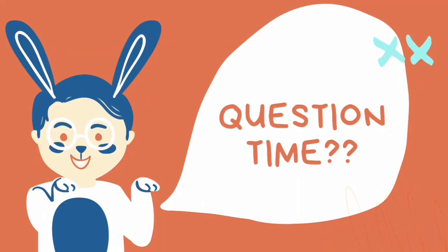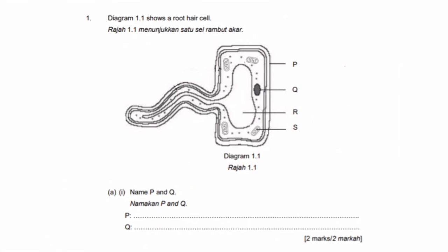Before I end the lesson, let's do a quick question time to see if you understood this topic. Diagram 1.1 shows a root hair cell with structures named P and Q. When answering questions, underline key points and study the diagram given. A root hair cell means this is a plant cell. P is pointing towards the outermost layer of the cell — that's right, it is the cell wall. Q is located near the vacuole and there is only one organelle that looks like Q in the whole cell — Q is the nucleus.